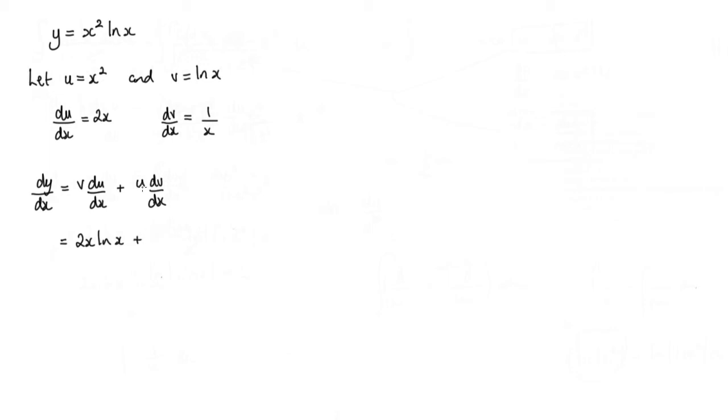plus u dv/dx, which is x squared times 1 over x. We can cancel this x with one of these, which leaves us with 2x log x plus x.